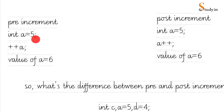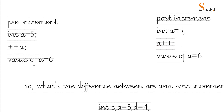In both cases — pre or post increment — it increases the value of the variable by one. So if the initial value of a is five, after ++a the value of a would be six (five plus one). Similarly, with the post-increment operator, if the initial value of a is five, after a++ the value of a would also be six. So in both cases the value of a is six after pre or post increment.